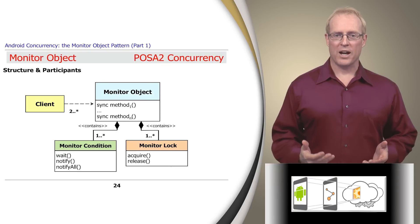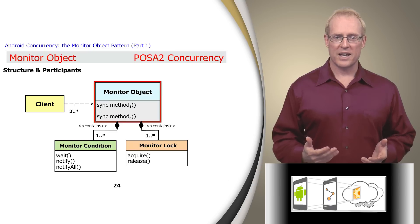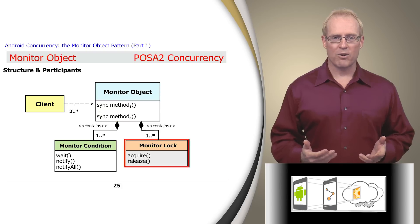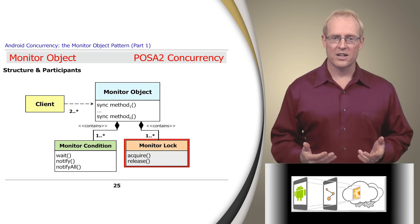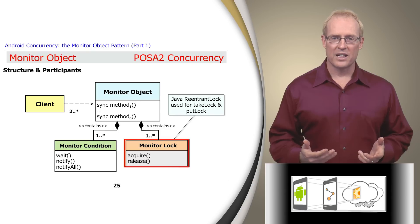This diagram shows the structure of the monitor object pattern. The monitor object class exports one or more synchronized methods. To protect the internal state of the monitor object from race conditions, all clients must access the monitor object only through these methods. Each synchronized method typically executes in the thread of the client that invokes it. Each monitor object contains one or more monitor locks, which ensure mutual exclusion of its synchronized methods on a per-object basis. For example, the LinkedBlockingQueue class uses two Java reentrant locks — take lock and put lock — as its monitor locks to protect the queue from corruption due to concurrent access.